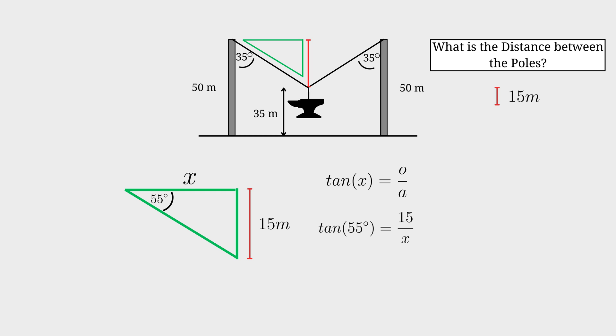Now we must solve for x. Multiply both sides by x then divide both sides by tan of 55. We have isolated x. Type 15 over tan 55 into your calculator and your answer for x will be 10.5031 meters, rounded off to 4 decimals.